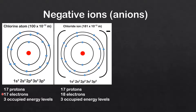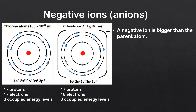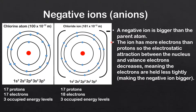Next we'll compare the number of protons, electrons, and occupied energy levels. For the atom we have 17 protons, 17 electrons, and 3 occupied energy levels. For the chloride ion we have 17 protons, 18 electrons, and 3 occupied energy levels. So a negative ion is bigger than the parent atom. The ion has more electrons than protons, so the electrostatic attraction between the nucleus and valence electrons decreases, meaning the electrons are held less tightly, making the negative ion bigger.